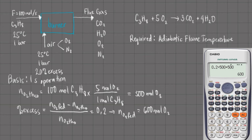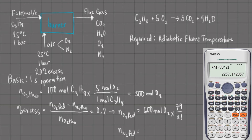The number of moles of oxygen fed is related to the number of moles of nitrogen fed. We simply multiply by the ratio 79/21, indicating that air is assumed to be 79% nitrogen and 21% oxygen. That gives us: 600 × 79/21 = 2,257.14 moles of nitrogen. These two values pertain to the oxygen and nitrogen in the air being fed.